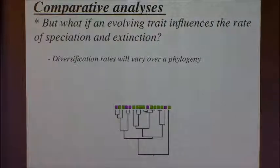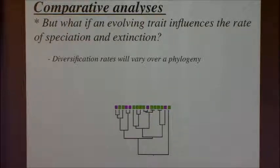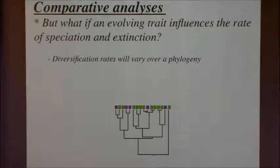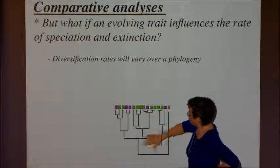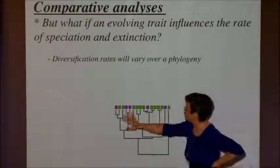But what if you are interested in an evolving trait that influences the shape of the tree — that influences the speciation and extinction rate? You can't actually separate out ancestral reconstruction from effects on speciation and extinction rate, because that same trait is influencing the shape of the phylogeny. One implication is that if the trait influences speciation and extinction rates, then those rates leading to lineages that you don't see vary across the tree.